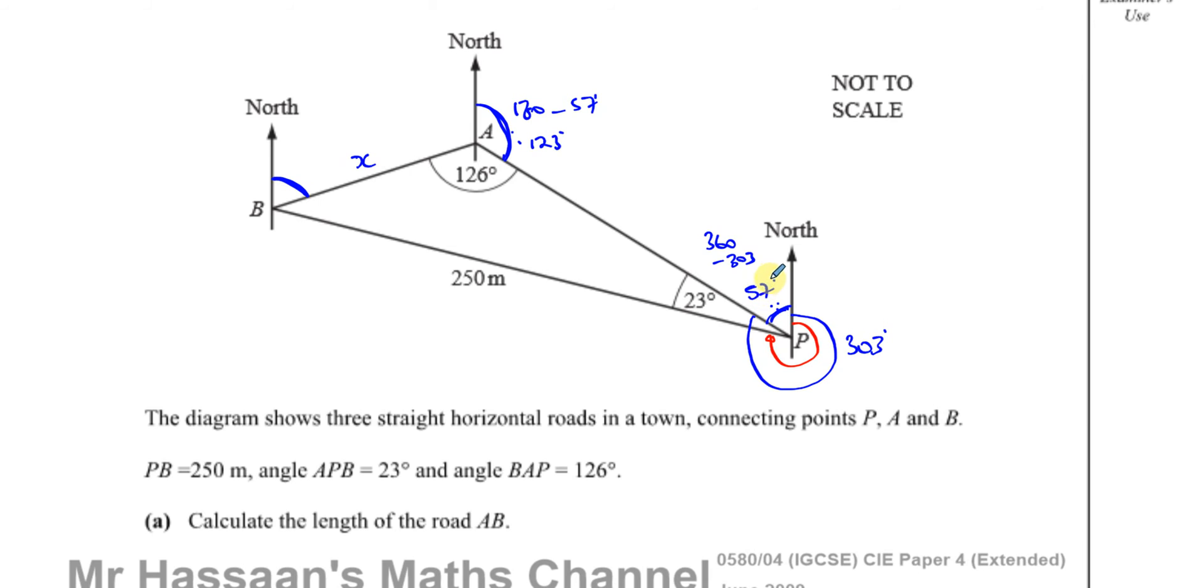In total these two angles add up to 123 plus 126, which is 249. So this angle over here is going to be 360 minus 249, which gives you 111.